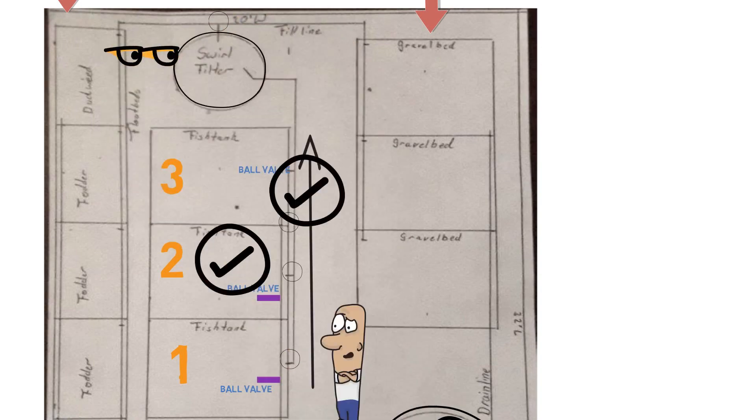So we have the swirl filter. Now, this you have to be particularly mindful of, of the flow rate that's coming into the swirl filter. And you have to make sure that you have the correctly sized filter because if we have too fast of a flow rate coming through, then the solids aren't going to be able to swirl and settle to the bottom.